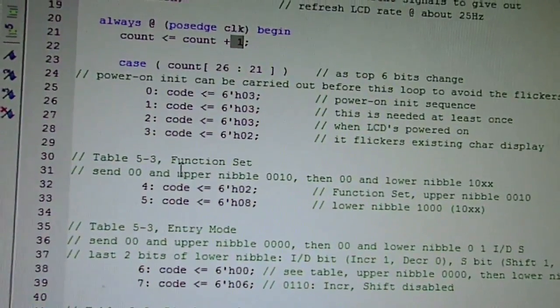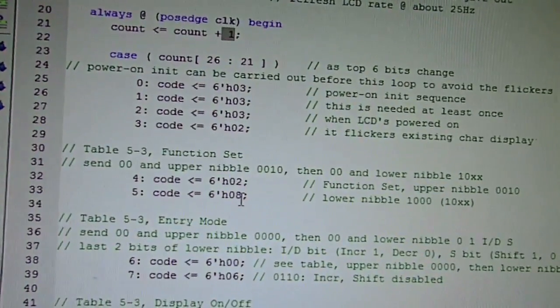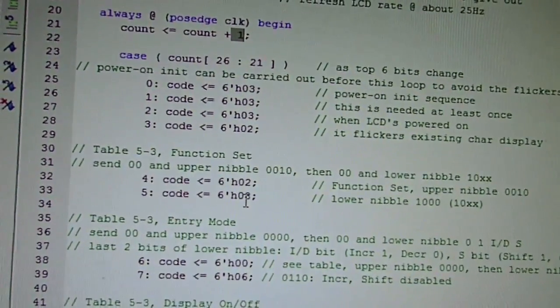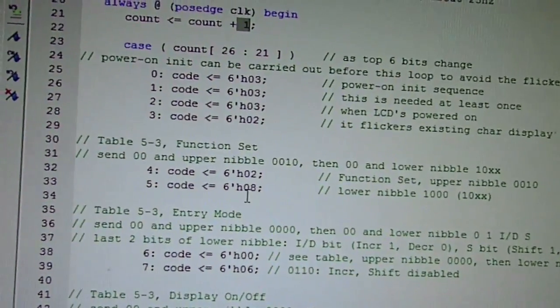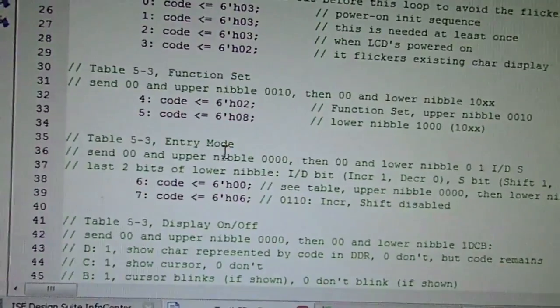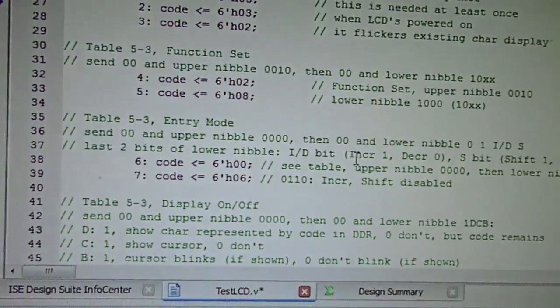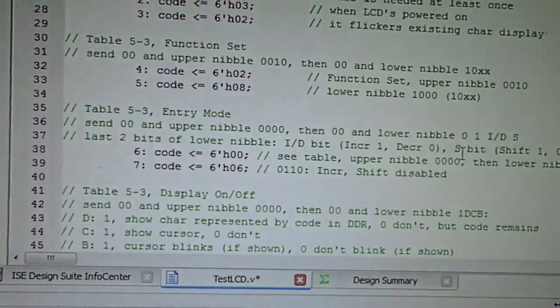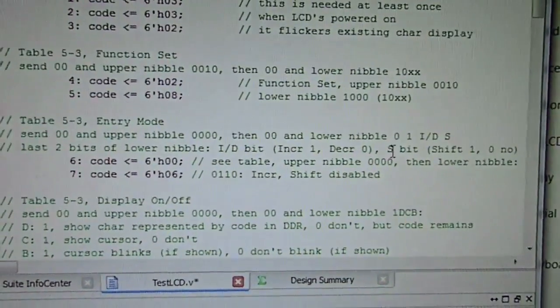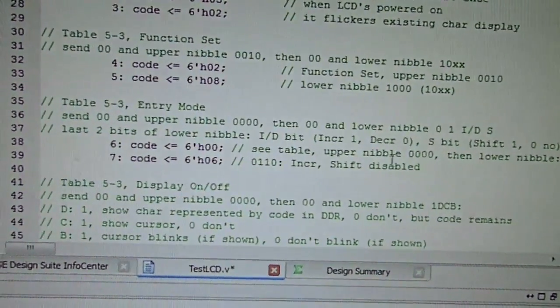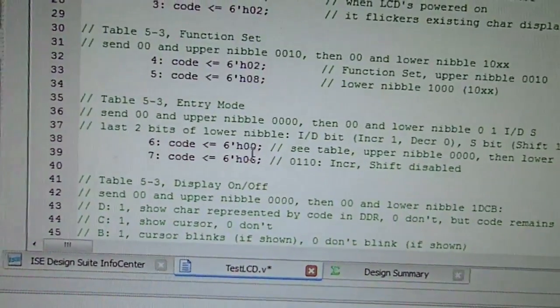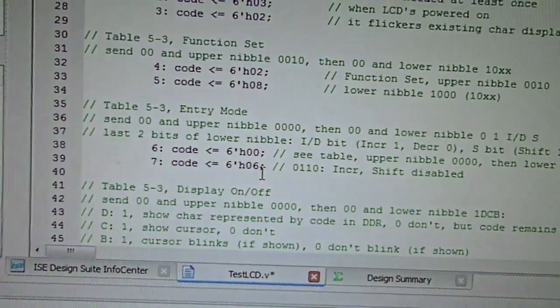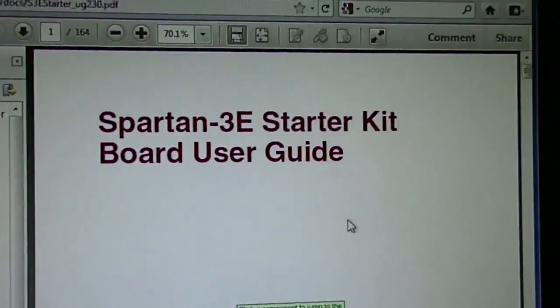Then we're going to have the function set, which is going to send out the 2 and A being the upper and lower nibbles. The front zeros are for the read/write and register select to be zero. Then the entry mode is set to have the position of the cursor increment by itself whenever we put out the character. Shifting is not used; we're not going to let the LCD shift by itself, so we're going to disable the shifting. That gives us an upper nibble zero, lower nibble six in two sending out sequences. All this is in the user guide.